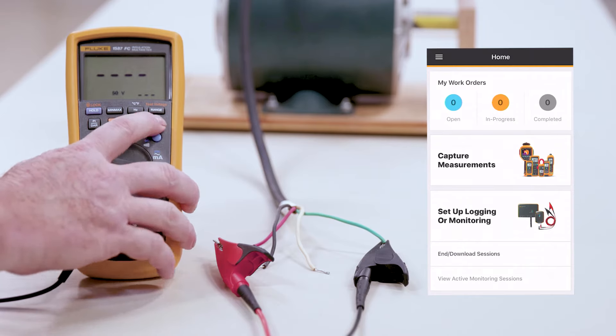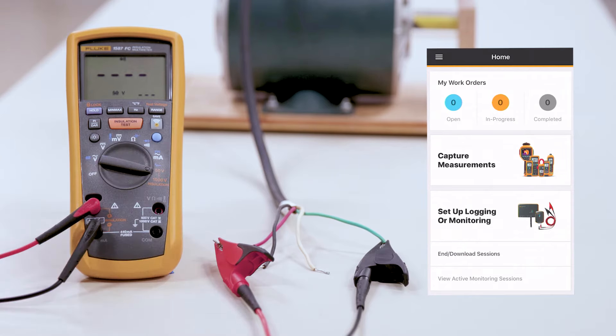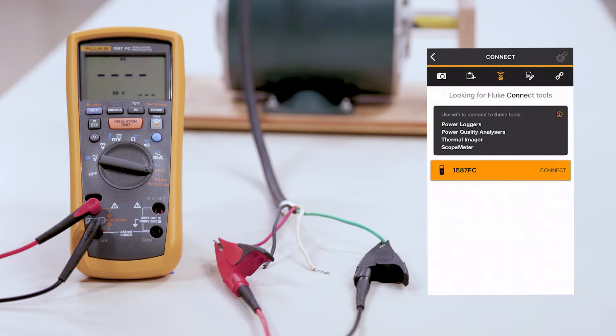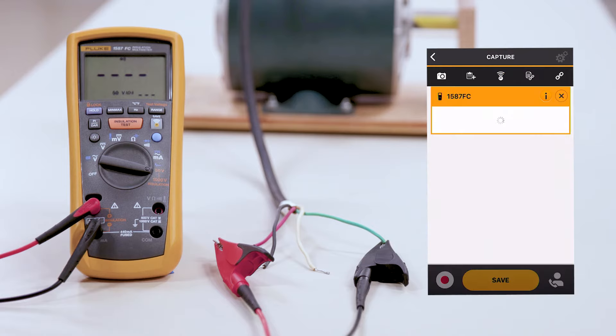In the corner here, we'll hit the Fluke Connect button. We're going to go over to our phone and hit the Capture Measurements. As you can see, the 1587 FC is now connected to it. We'll connect to that meter.